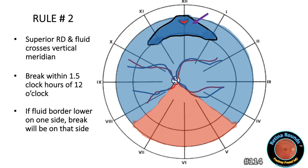Rule number two: here we have a superior retinal detachment where the fluid crosses the vertical meridian, involving both the nasal and temporal halves of the retina. In this case, one can expect the break to be located superiorly at roughly the 12 o'clock position, extending one and a half clock hours in either direction. If the fluid border is lower on one side, the break will likely be on that side. For example, if the fluid border were lower on the nasal side, we would expect the break to be between 10:30 and 12 o'clock.